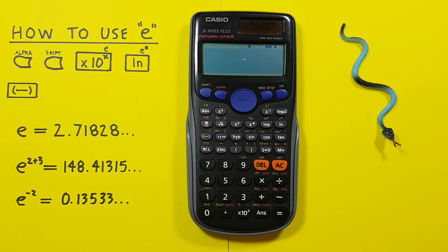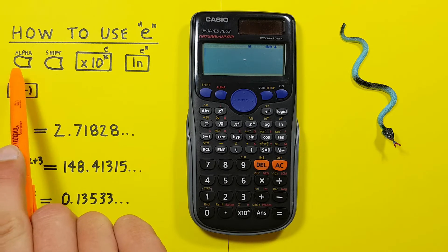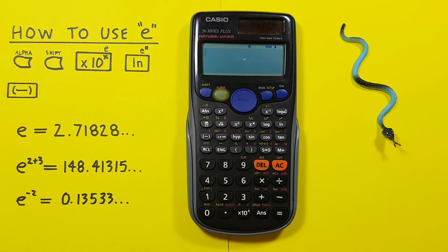To do that we'll use the alpha key that looks like that, located here. The shift key that looks like this, located here. The times 10 to the power of X key with the alpha function of E that looks like this, located here.